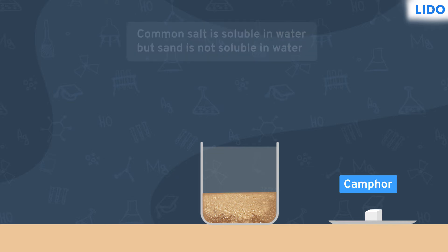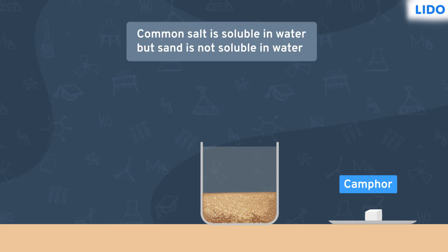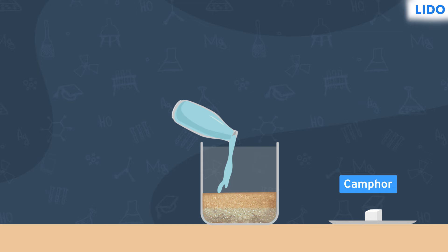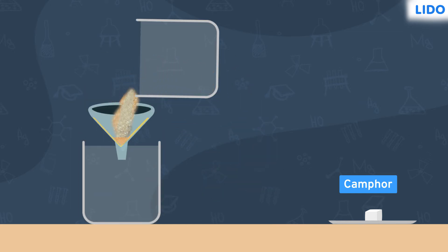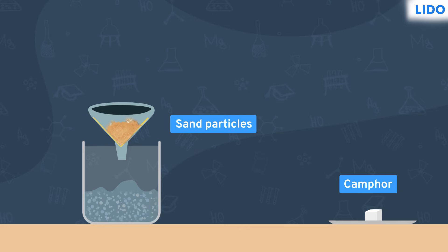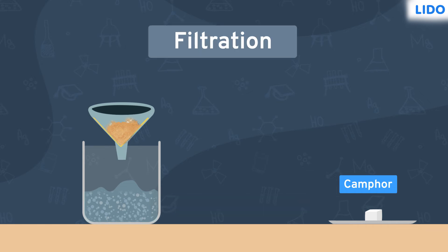Now everyone knows that common salt is soluble in water but sand is not soluble in water. So Lucky adds water to the remaining mixture and then pours it through a filter paper. Sand particles will remain on the filter paper but other components of the mixture — that is common salt and water — pass through the filter paper. This process is called filtration.